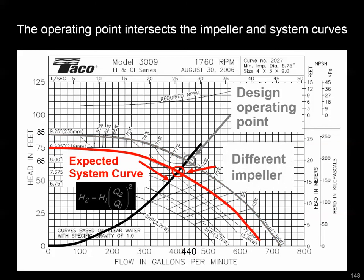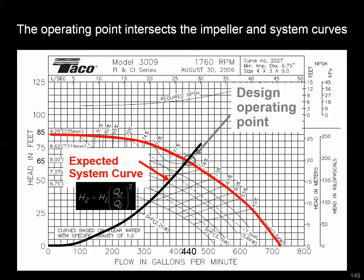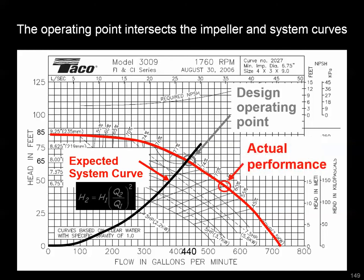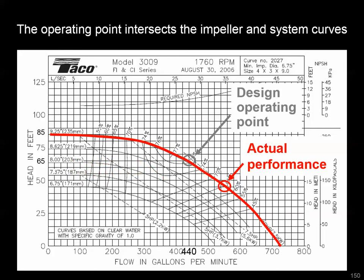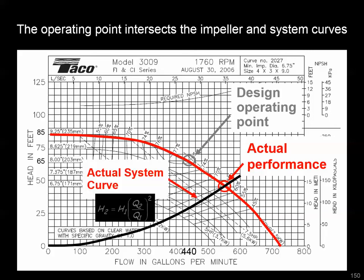If the designer had selected a different impeller for the same system, you can see where the actual operating point would be based on that new intersection. Let's say we have actual performance that's different than what the designer expected. Based on the actual performance, that essentially means there is a system curve — based on all the pressure losses in the distribution — that looks less steep. This is your actual system curve, and the actual operating point lies at its intersection with the impeller size in your system.